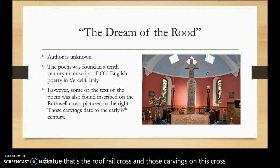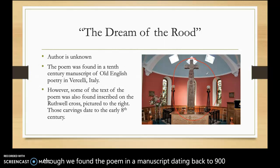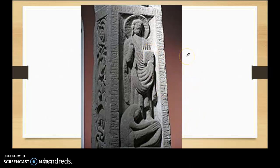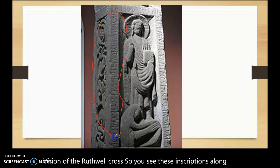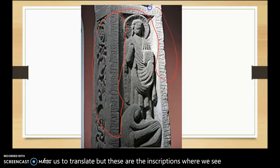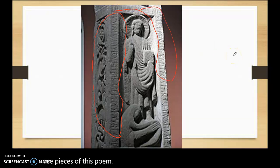Even though we found the poem in a manuscript dating back to 900, we've seen pieces of the poem as far back as the early 700s. This is a closer view of the Ruthwell Cross. You see these inscriptions along the side — all of those words are Old English, so it's really hard for us to translate, but these are the inscriptions where we see pieces of this poem.